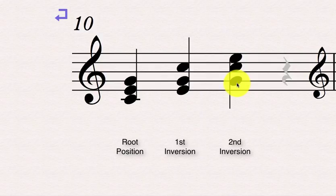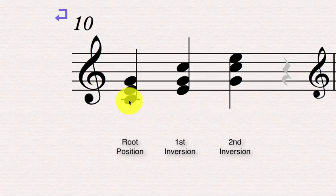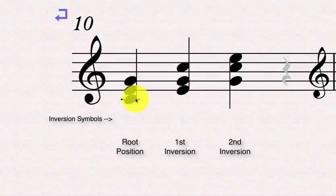Now what we like to do with these, instead of having to write out root position, first inversion, second inversion every time you encounter these, we have a little shorthand. We call these inversion symbols, and they're pretty straightforward. For a major triad, the inversion symbol can either be omitted if it's in root position, or if you want to include it, we use the numbers 5, 3.